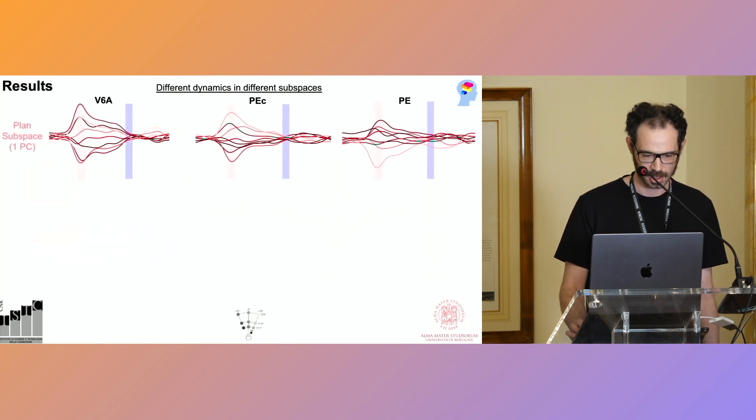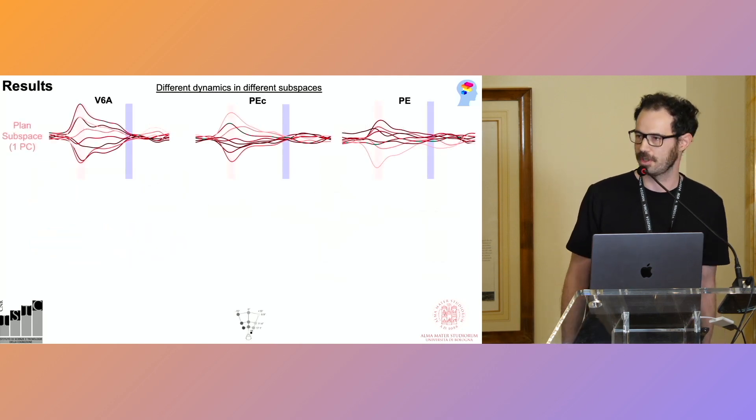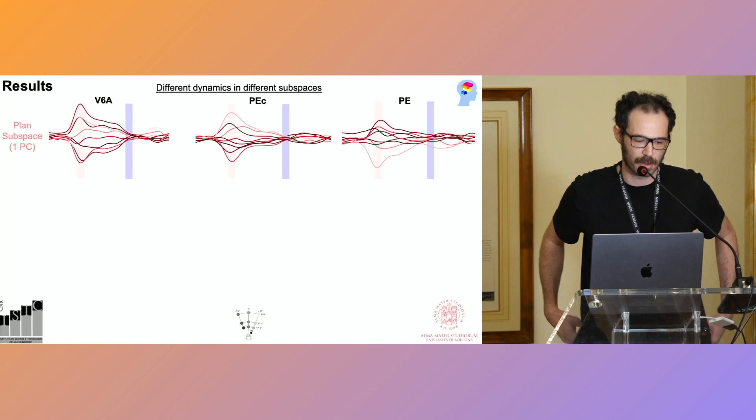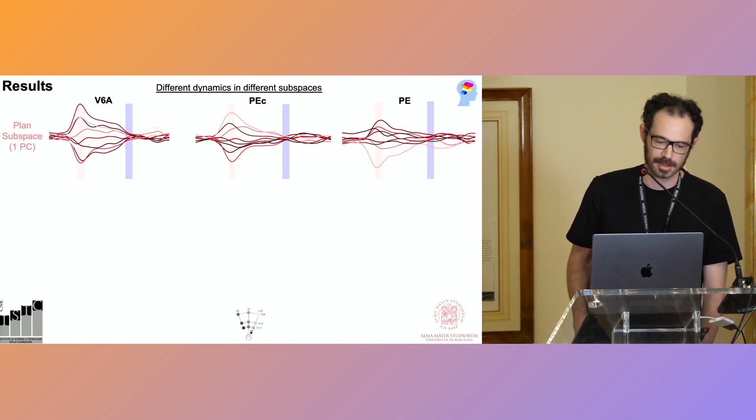Let's move to the results. In the columns, we have the three different areas. And in the rows, we will see the different subspaces that we found. So this is the plan subspace.